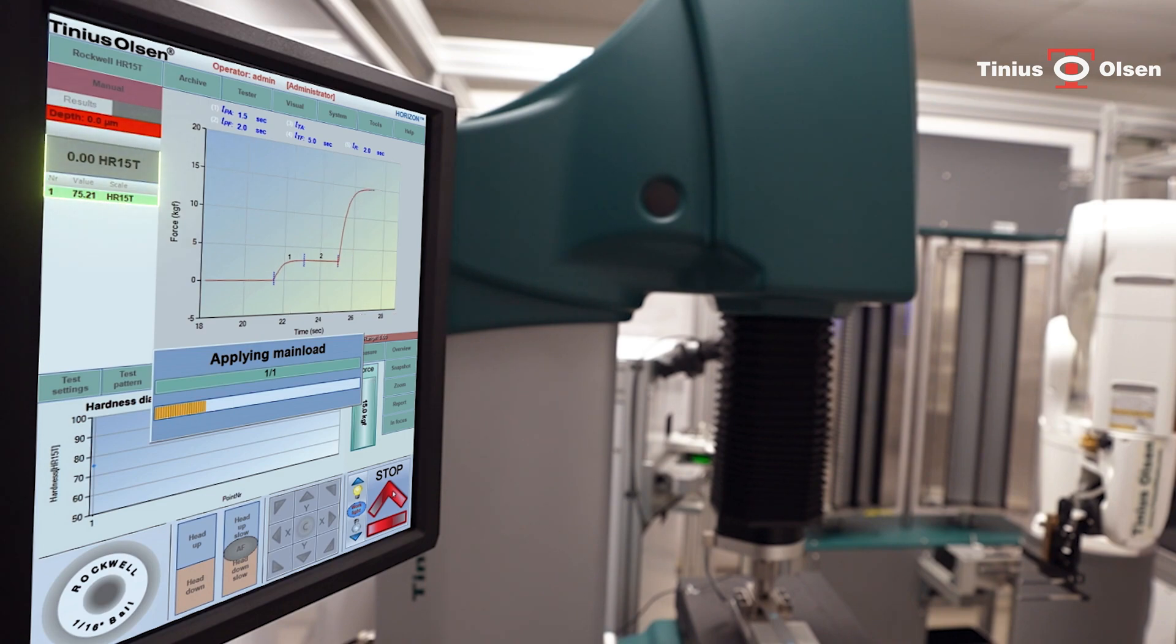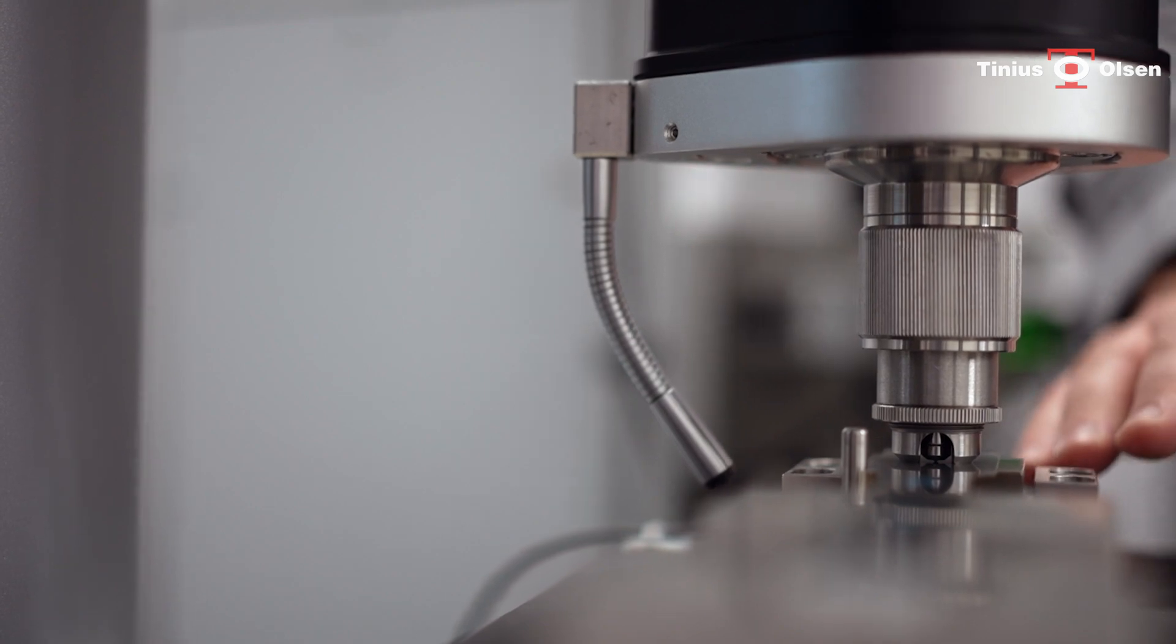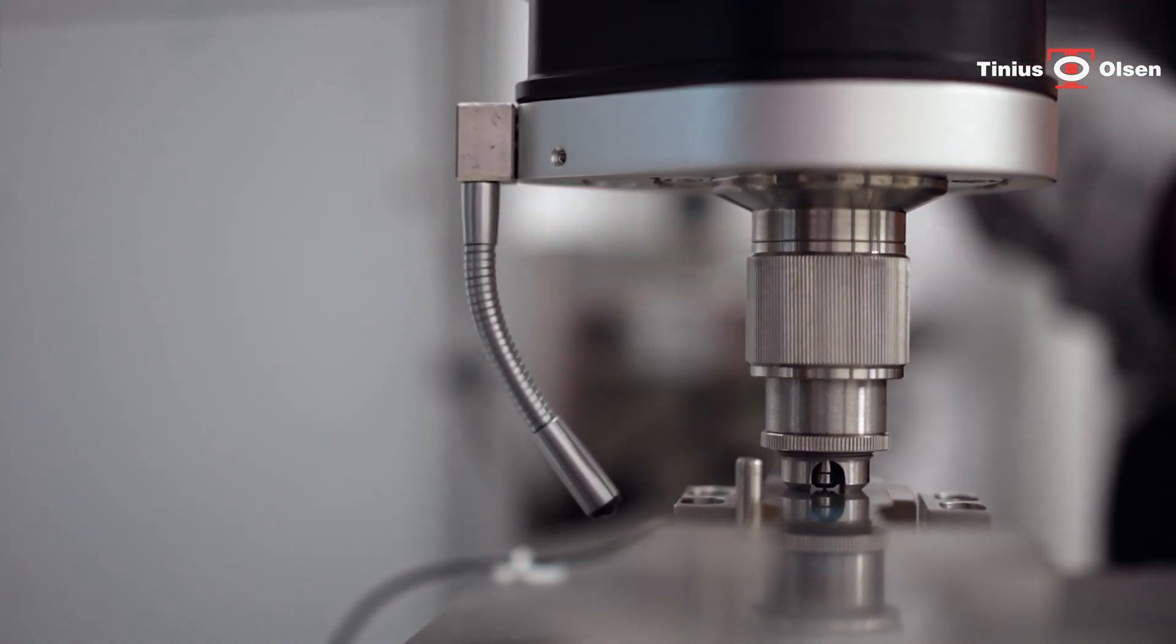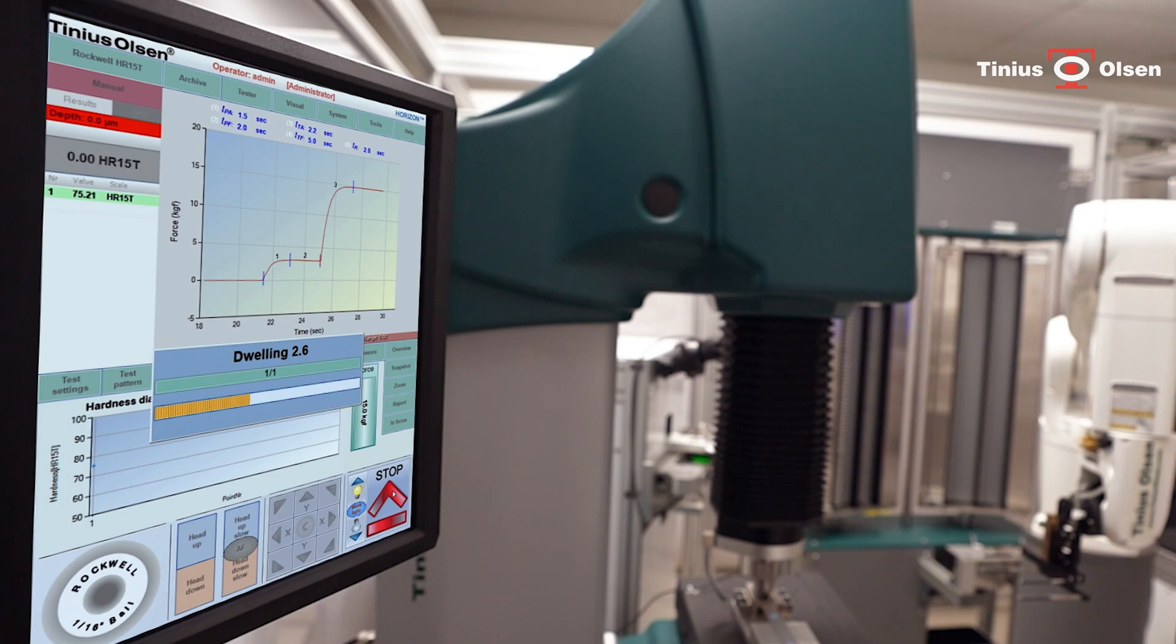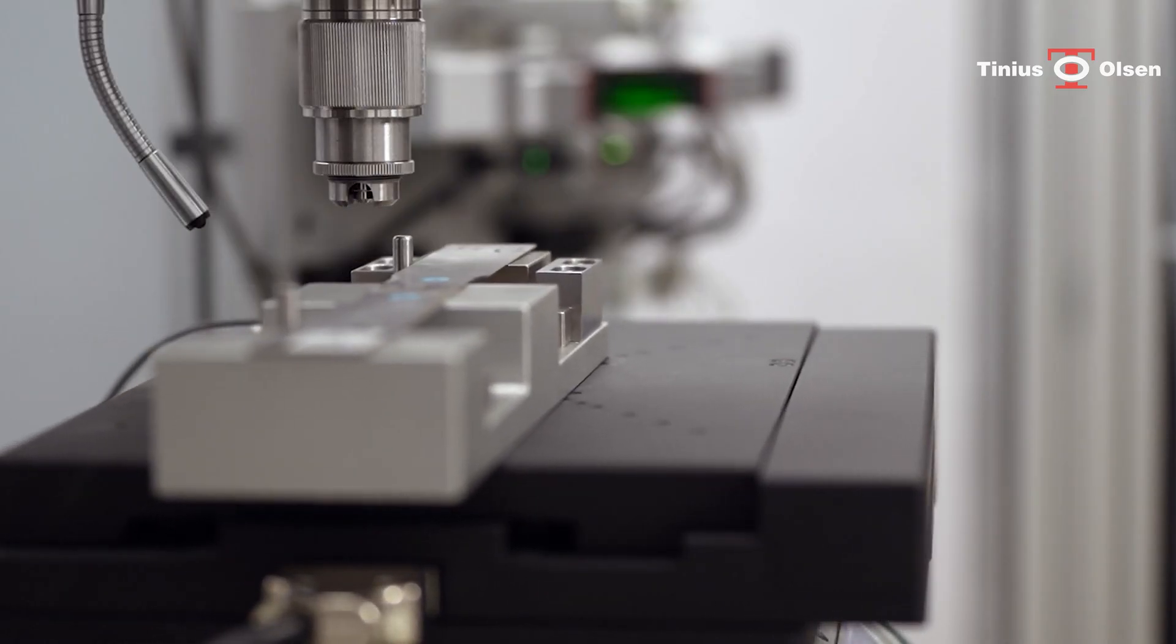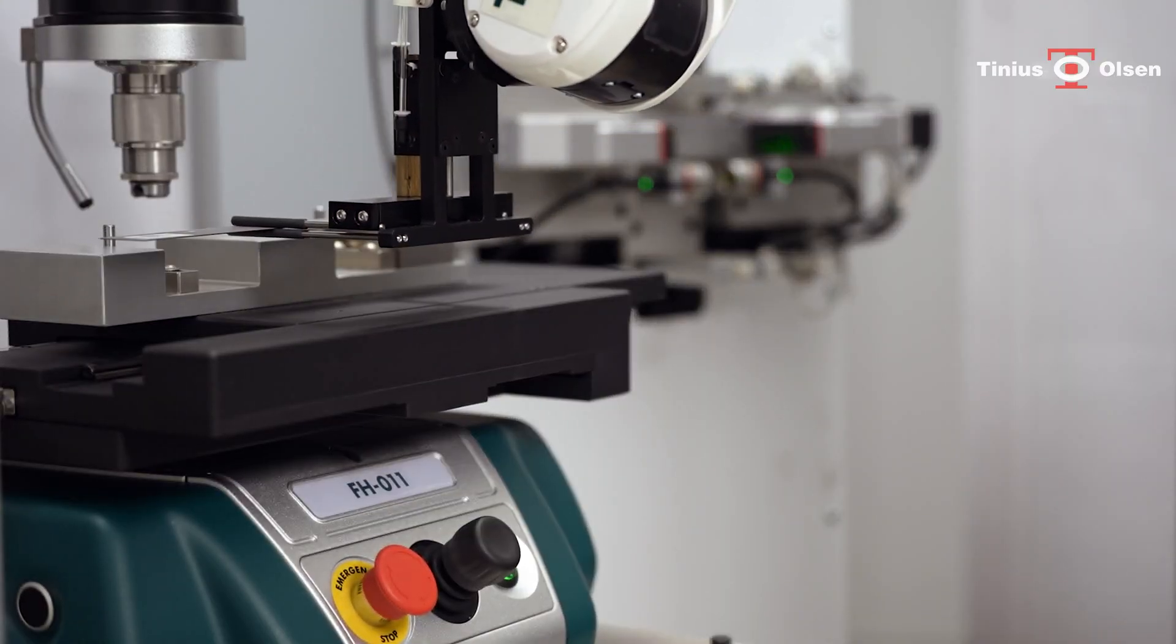You will see the test running on the vertical screen pane attached to the hardness tester. After the test is complete, the robotic arm will retrieve the specimen from the XY stage.